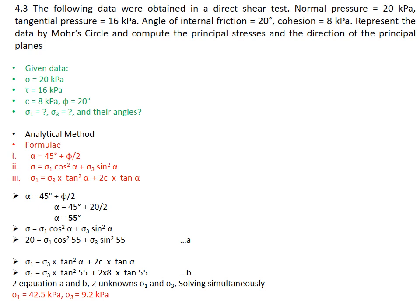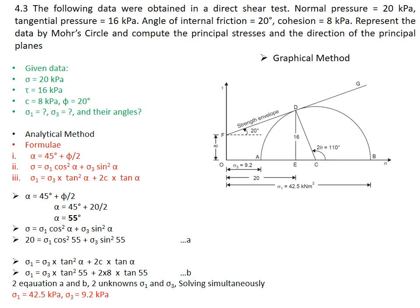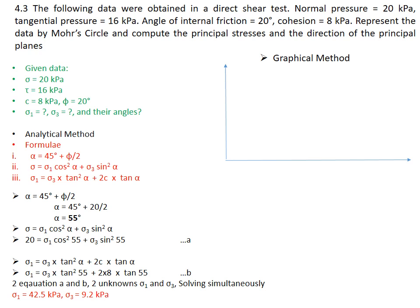Now moving to the most important part which is the graphical method. So first, as it is a direct shear test, the Mohr circle should come to your mind. This is the answer what we must be getting at the end. Now we will learn how to plot this. If you have a graph sheet you can use it or just plot two axes on your notebook.